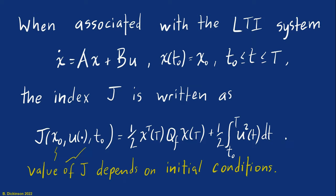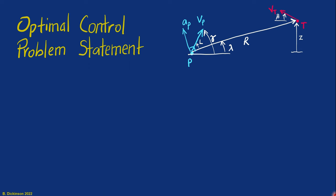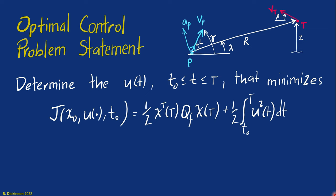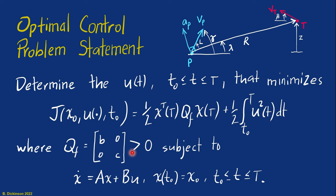Now with that, we are ready to state our optimal control problem. The optimal control problem is to determine the control signal that minimizes this performance index subject to or constrained by the linear time invariant system. That's just the kinematics of the engagement. Arriving at and understanding this problem statement is the main objective of this module.